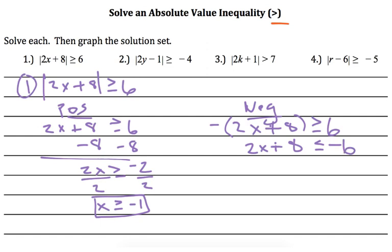Subtracting 8 from both sides gives us 2x is less than or equal to negative 14. Divide by 2, so x is less than or equal to negative 7.